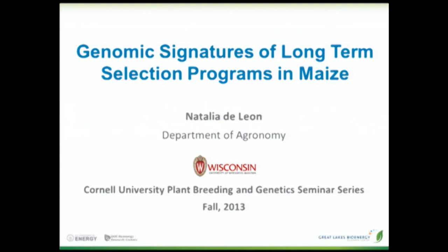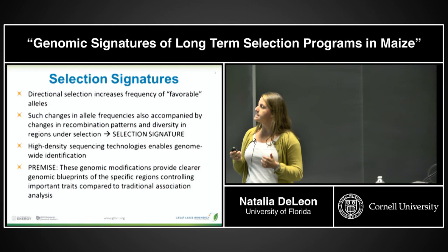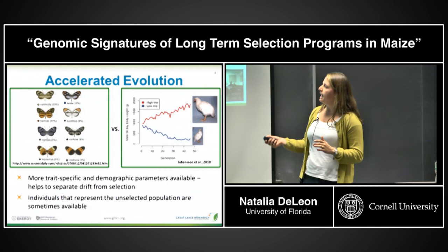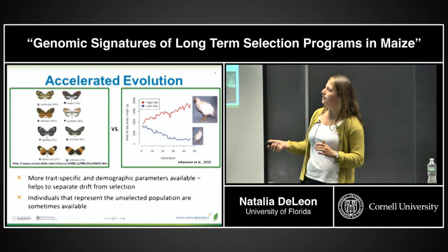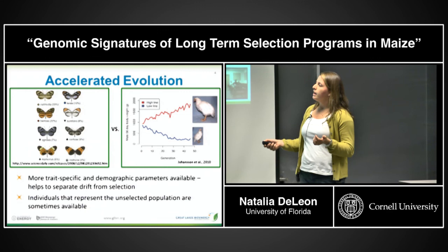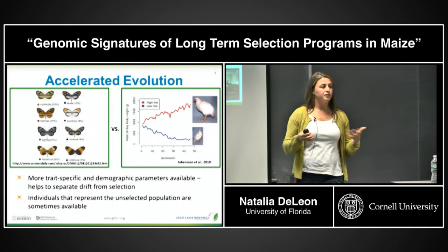One of the advantages of doing that in populations selected by humans versus natural populations is that we know exactly what the goal of the selection is. For example, in the case of chicken selected for body weight, we can make inferences about the regions affected in that genome and how they could be associated with body weight — versus natural populations where many different forces and traits are selected at the same time.